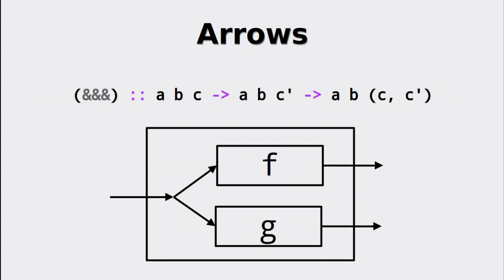It gets interesting once we use the triple ampersand (&&&) in order to split a single value and create a tuple from it, which is then used with the supplied arrows. Essentially, the incoming value is just copied.